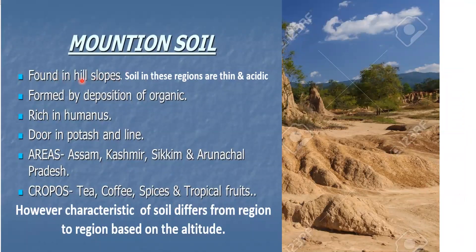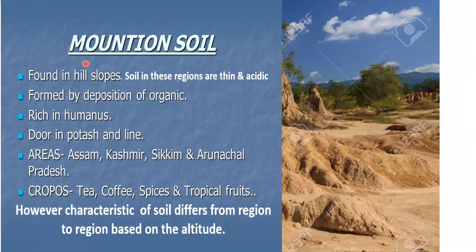Mountain soil is found on hill slopes. Soils in these regions are thin and acidic. They are formed by deposition of organic matter rich in humus but poor in potassium and lime. They are found in areas like Assam, Kashmir, Sikkim and Arunachal Pradesh. Tea, coffee, spices and tropical fruits are grown here. However, mountain soil differs from region to region based on the altitude, because the same type of trees do not grow throughout the mountains at different altitudes, and so the soil also differs.